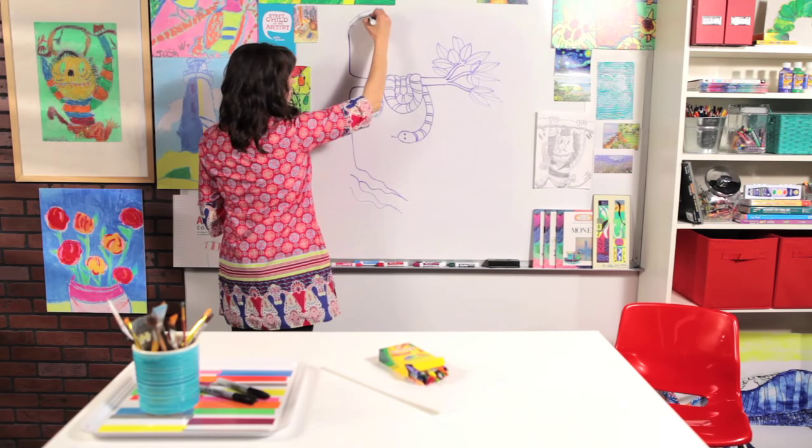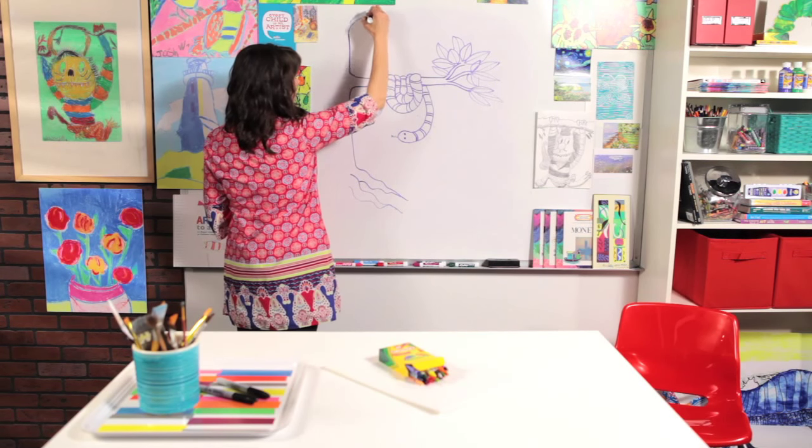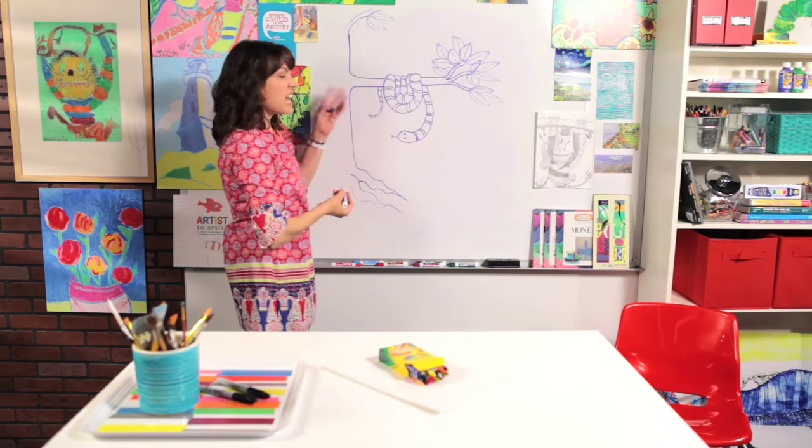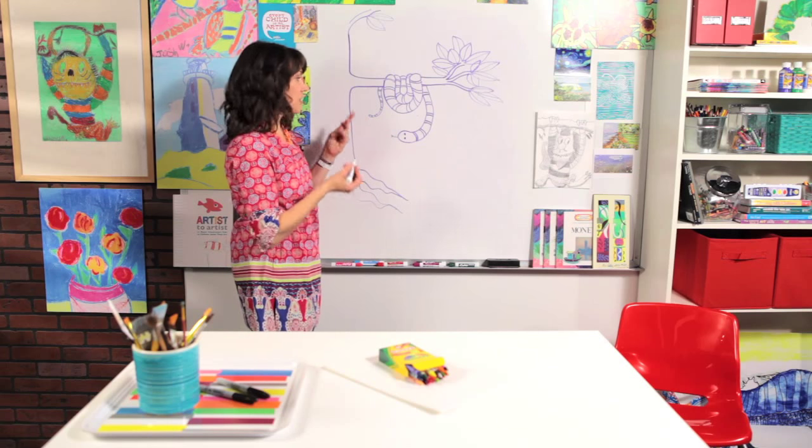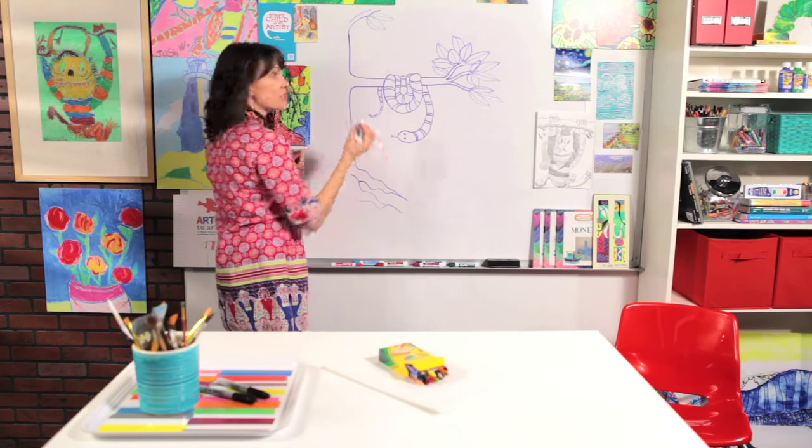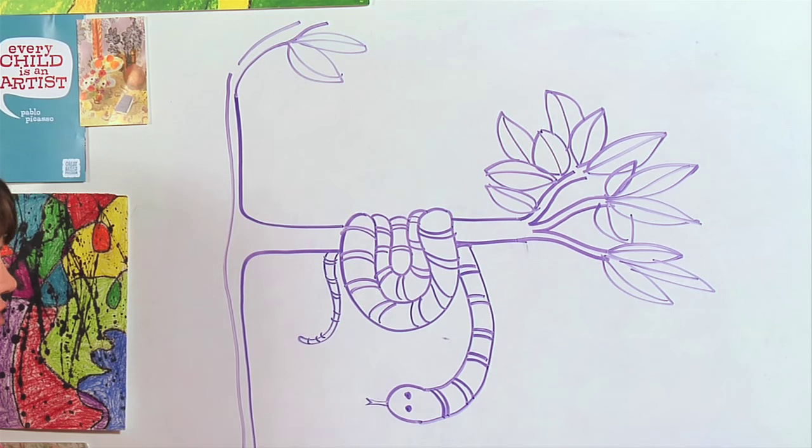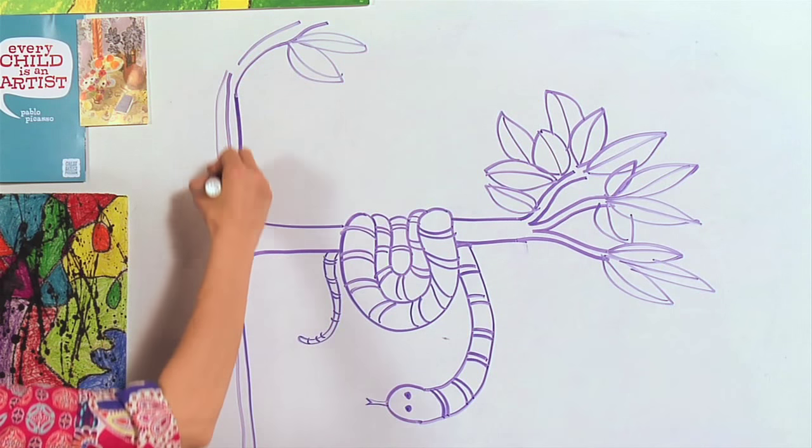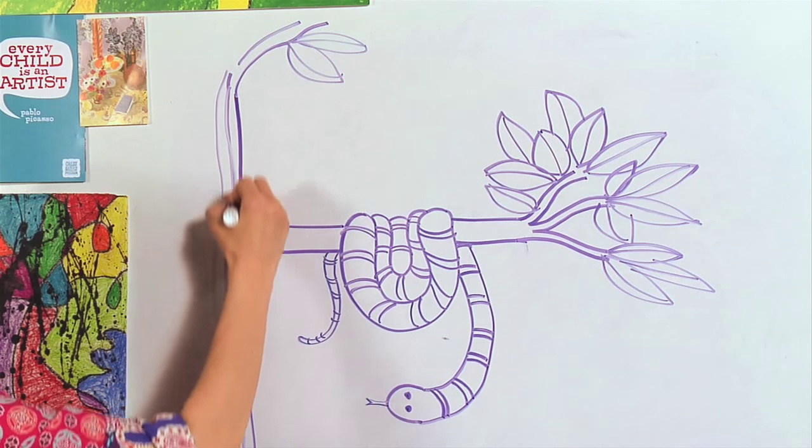And maybe a branch up here. And some more leaves. Now the way to make a tree look like it has texture is just to add lines. All you have to do is kind of wavy lines. So starting up here, I'm just going to draw a line down. And then I'm just going to keep drawing lines like this.